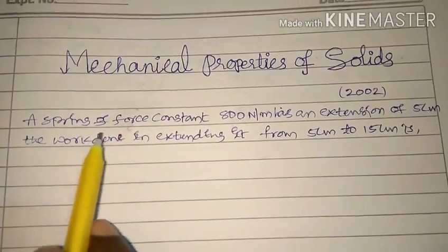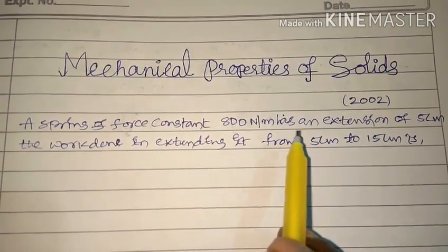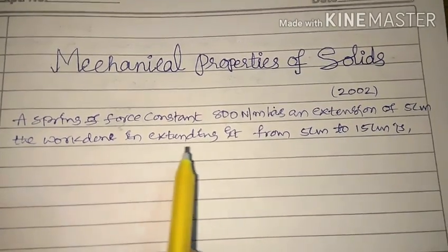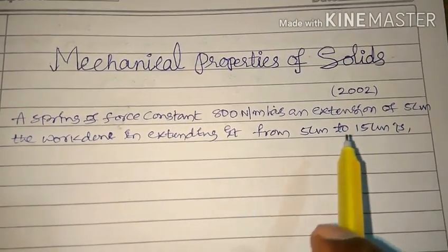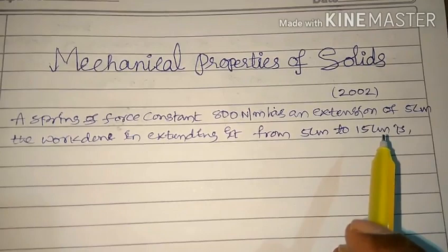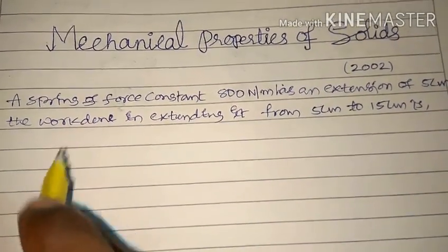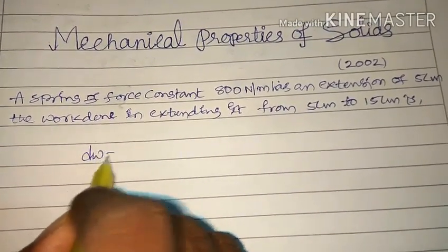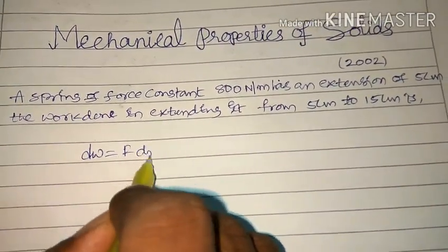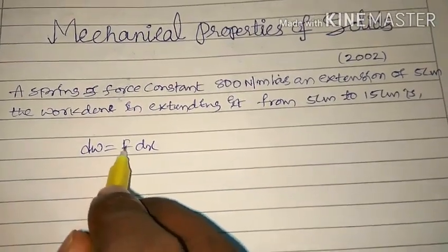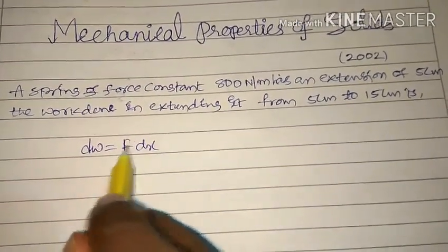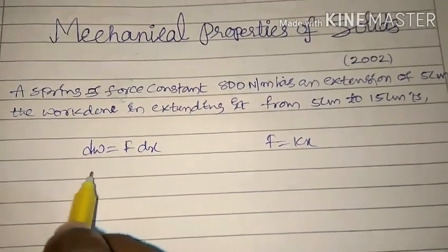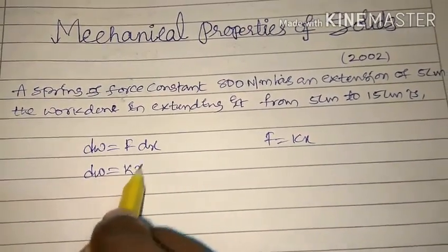This question was asked in 2002. A spring of force constant 800 Newton per meter has an extension of 5 centimeter. The work done in extending it from 5 centimeter to 15 centimeter — for a spring the work done dW is equal to F·dx, and the force of a spring is F = kx, so dW = kx·dx.